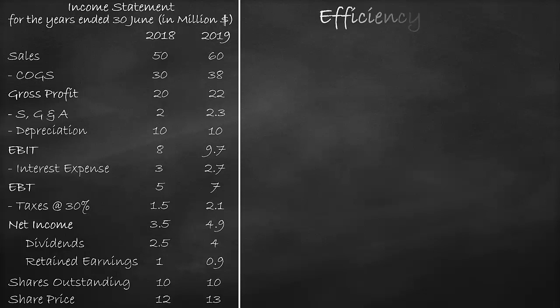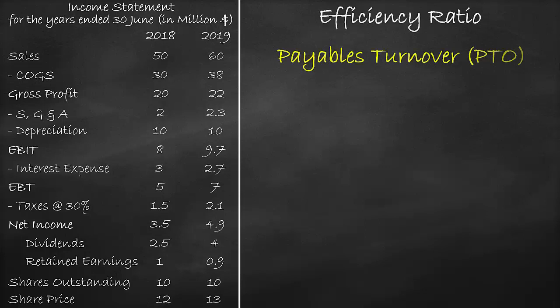An example of the efficiency ratio is the payables turnover ratio. The payables turnover ratio formula is the cost of goods sold divided by the accounts payable.